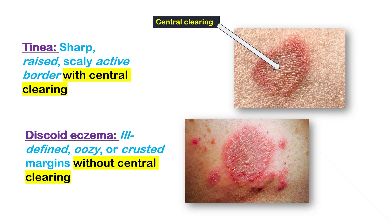The most important clues are the margin and central area. Tinea has a sharply defined, raised, scaly border that often expands outward, leaving a central clearing — which is a hallmark of tinea infection. In contrast, discoid eczema has poorly defined, oozy or crusted edges and no central clearing.